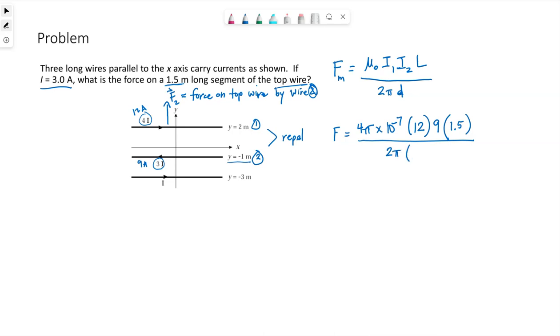2 pi d is the distance between these two wires. So the top wire is located at 2, the middle wire is located at negative 1. So those are the coordinates at which they're at. So this is 3 meters apart. That's what I put in for d, 3 meters. I can simplify this a little bit. The 2 pi can make that be 2, the 3 can make this be 3.